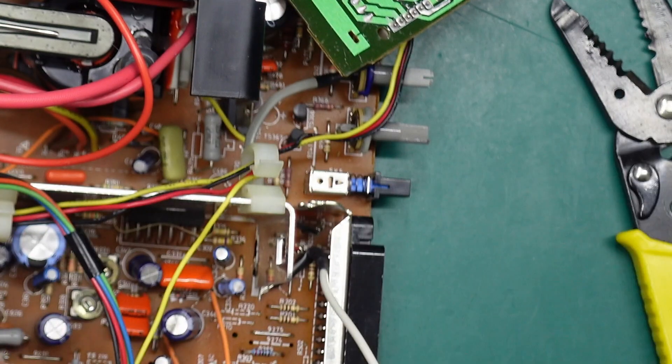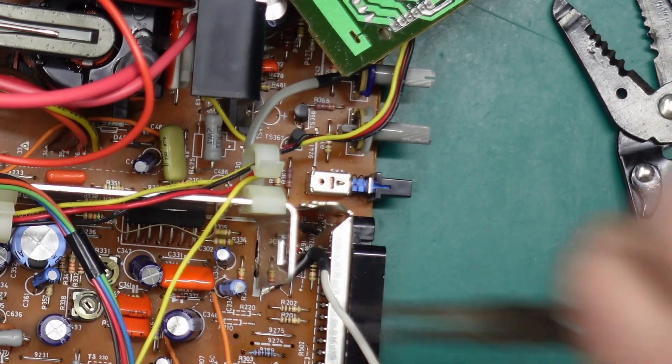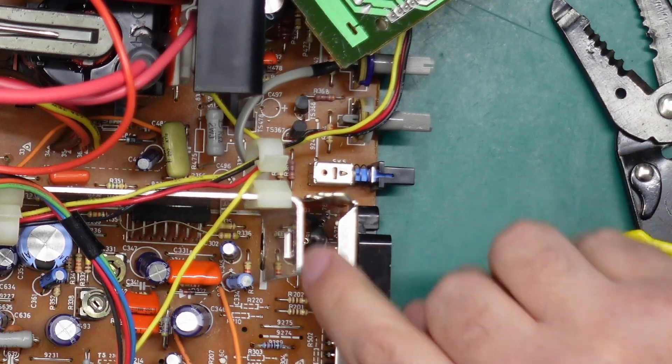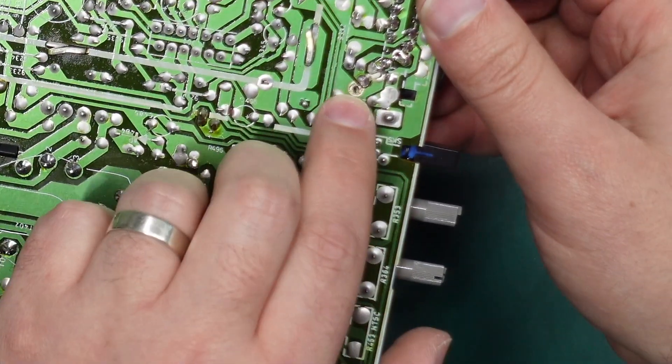And then our ground wire which I bent out of the way this guy here, it's going to be impossible to see but our ground wire goes back through the board and sticks out this hole here.